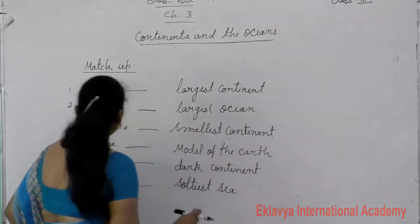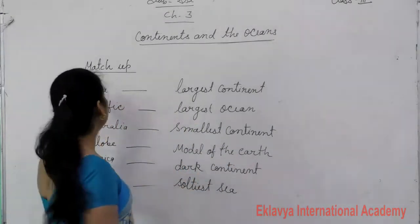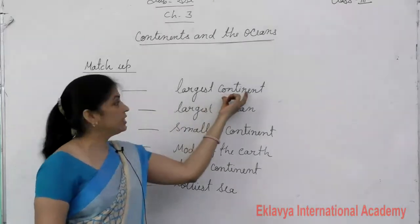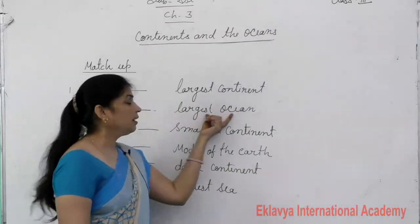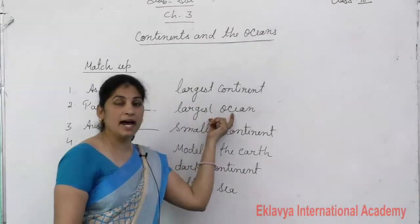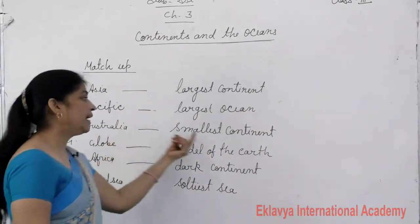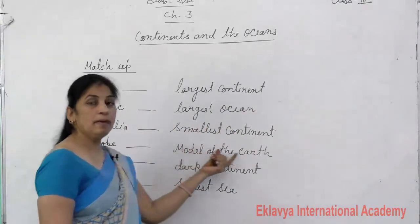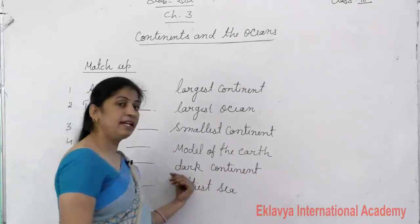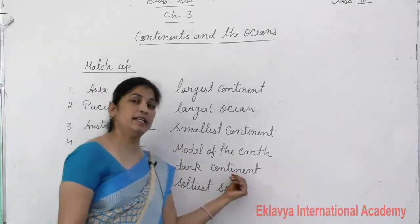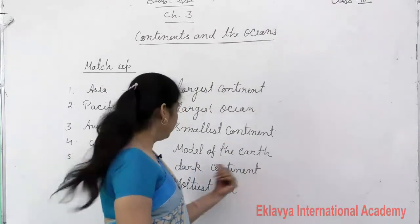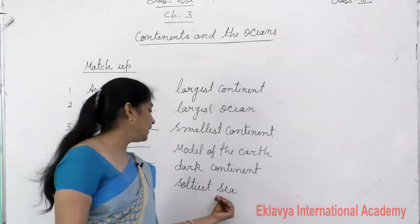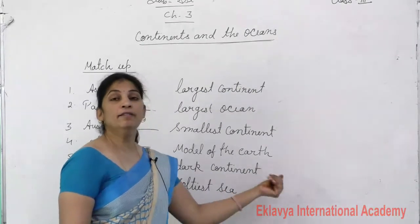Let me repeat once again. Asia is the largest continent. Pacific is the largest ocean and Australia is the smallest continent. Globe is the model of the earth. Africa is the dark continent. Last one is the Dead Sea — that is the saltiest sea in the world.